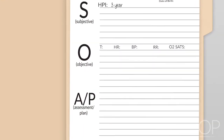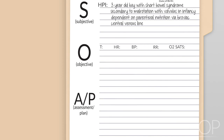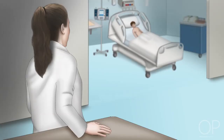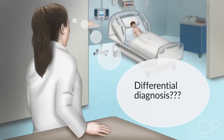You're taking care of a three-year-old boy with short bowel syndrome secondary to malrotation with volvulus in infancy. The patient is dependent on home parenteral nutrition infused via a Broviac line. He is admitted now for observation after a few hours of sleepiness and vomiting. The nurse pages you that his oral temperature is 102 degrees Fahrenheit. On the way to the patient's room, you think about your differential diagnosis, which should include the following.